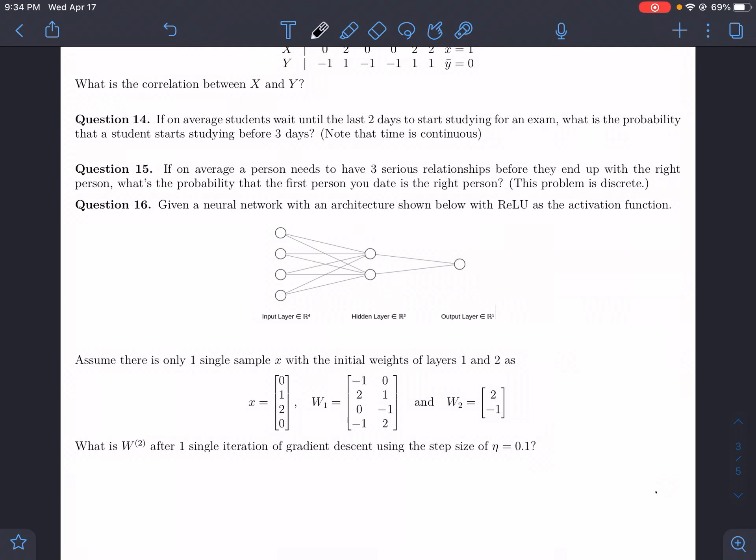Hello and welcome to question 16 on DS4400's practice exam. Given a neural network with the architecture shown below, assume there is only one single sample x with these initial weights and we have ReLU as our activation function. What is the weight of the second layer after one single iteration of gradient descent using the step size of 0.1?